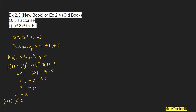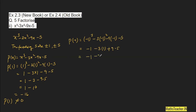Now we try p(−1). p(−1) = (−1)³ − 3(−1)² − 9(−1) − 5 = −1 − 3(+1) + 9 − 5 = −1 − 3 + 9 − 5. There is only one positive term, +9, and the negatives are −1, −3, and −5. Adding the negatives: 5 + 3 = 8, then 8 + 1 = 9. So it is −9 + 9 = 0.